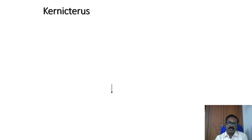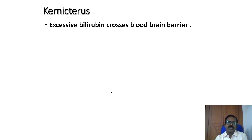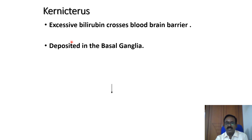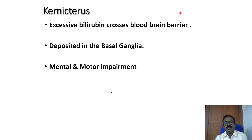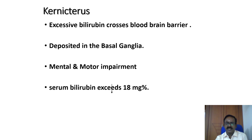Kernicterus may appear in erythroblastosis fetalis. Excessive bilirubin crosses the blood-brain barrier in the newborn, as it is not well developed. The bilirubin is usually deposited in the basal ganglia, causing motor and mental impairment. The basal ganglia's main function is motor movements, which is affected in kernicterus. It usually occurs when the bilirubin level is more than 18 milligrams percent.